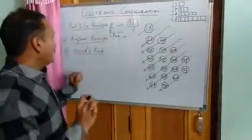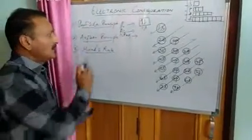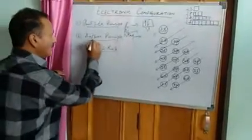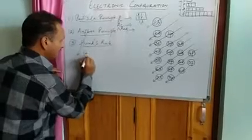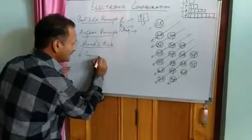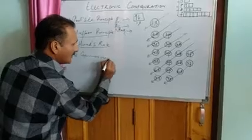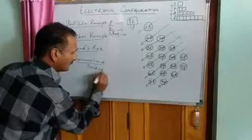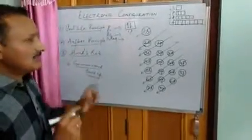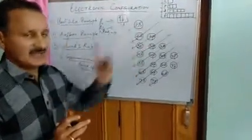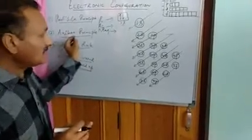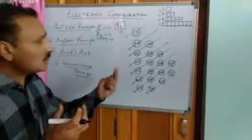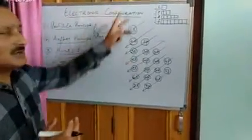Now we have the second rule, that is the Aufbau rule. Here 'Aufbau' is basically a German word meaning 'builder.' What we have to build up here is the electronic configuration of an element. So the Aufbau principle is a law which tells you how you should proceed while building up the electronic configuration of an element.